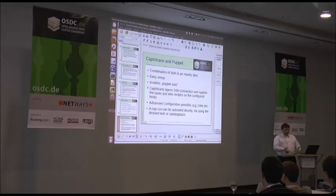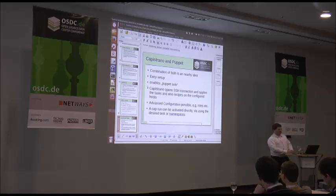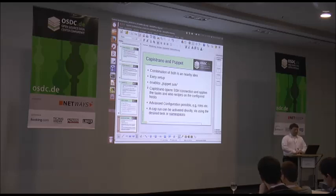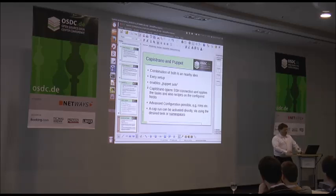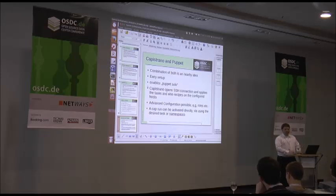A combination of both is a natural idea because both come from the Ruby environment, and someone who knows Ruby well can deal with this very easily. It can be set up just by using the corresponding Ruby module, enabling a kind of Puppet solo approach. So you don't have to use the master environment — you just care about your Puppet manifests, copy them over, run them, and recycle them again for another run. Capistrano opens an SSH connection, applies the tasks and recipes on the configured hosts, giving you a basic groundwork to set up Puppet recipes.